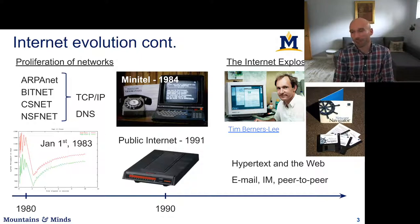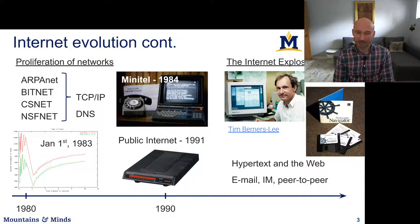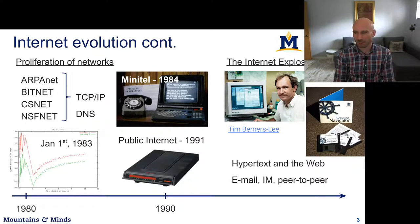With the introduction of the web there were what were called killer apps, such as email. Email had been present since the 1970s, but this was the first time it reached businesses and people's homes at large scale. Instant messaging and eventually peer-to-peer applications for file sharing also emerged.